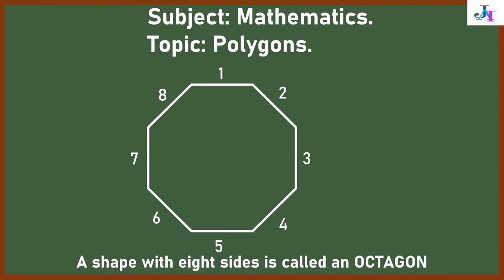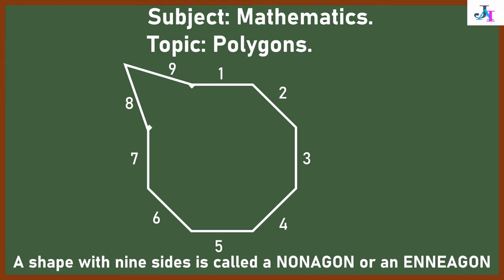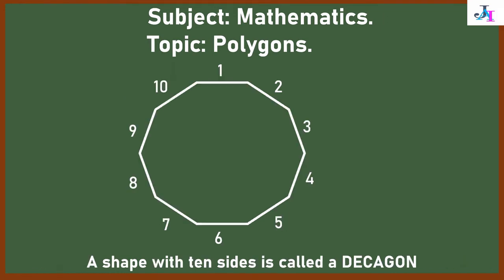A shape with nine sides is known as nonagon or enneagon. This one has ten sides. We call it decagon.